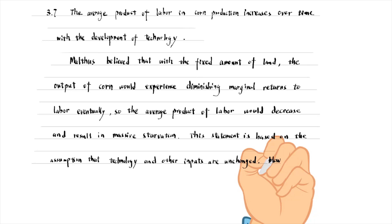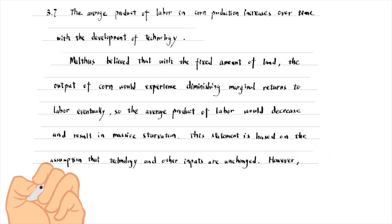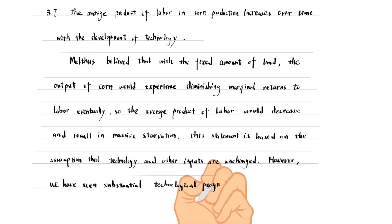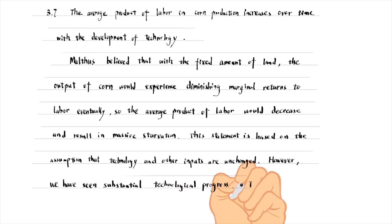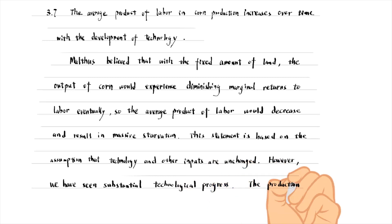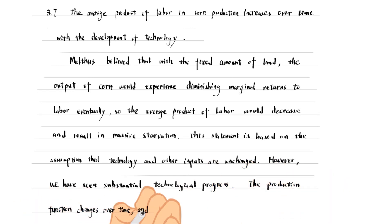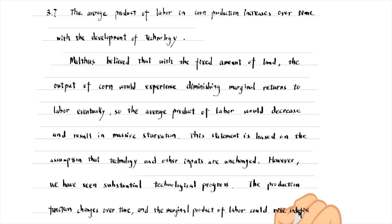However, in the past decades, we have seen substantial technological progress. Farmers make greater use of other inputs such as fertilisers, capital, and superior seeds. The production function changes over time, and the marginal product of labour could rise indefinitely.